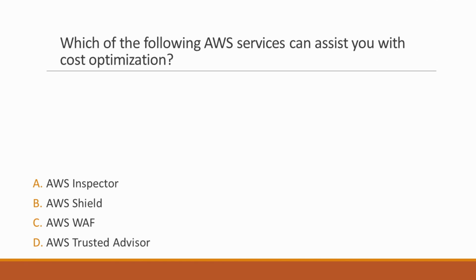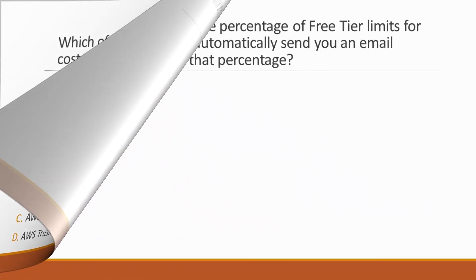Next question: Which of the following AWS services can assist you with cost optimization? Options: A. AWS Inspector, B. AWS Shield, C. AWS WAF, D. AWS Trusted Advisor. Correct answer is option D, AWS Trusted Advisor, because Trusted Advisor can assist you with the cost optimization of your AWS environment.